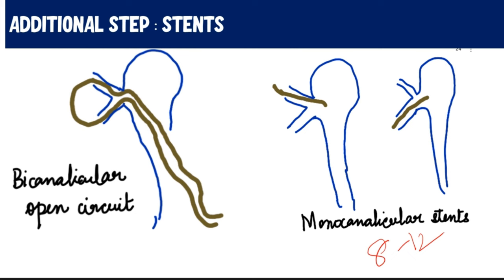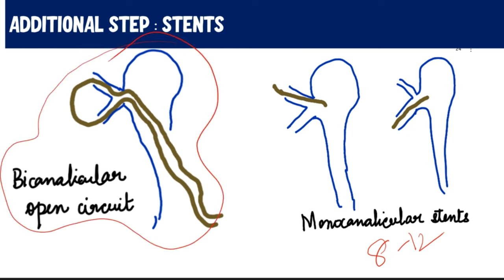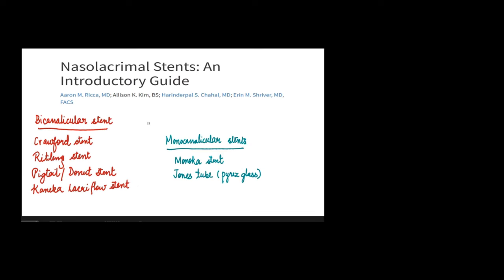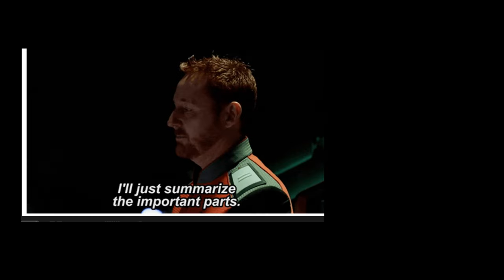If a stent is inserted through both parts of the canaliculi, it is called a bicanalicular stent. If inserted through only one part, it is called a monocanalicular stent. Various available bicanalicular and monocanalicular stents have been summarized here. For more information, a well-written article on nasolacrimal stents is referenced.